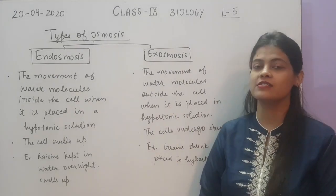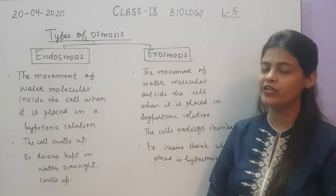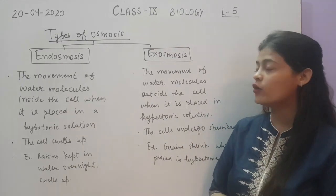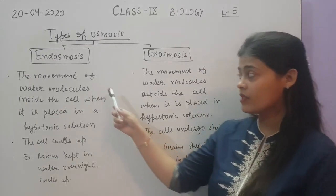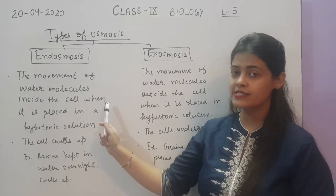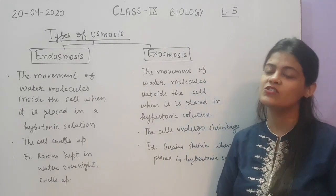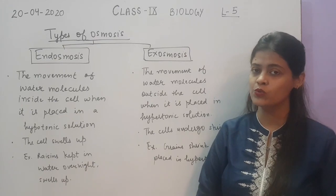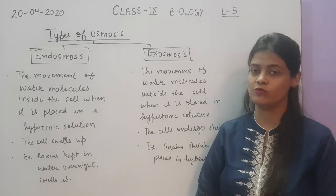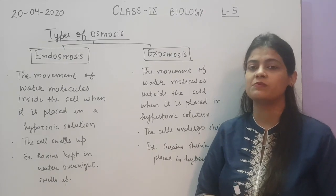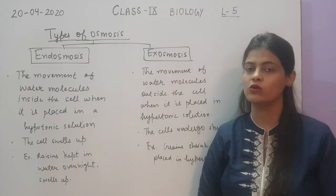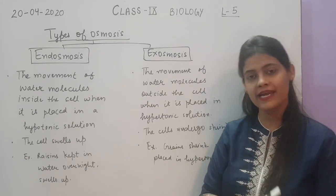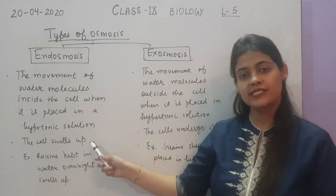So we have discussed the types of solutions on the basis of concentration and movement of water molecules. On the basis of movement of water molecules, there are two types of osmosis: endosmosis and exosmosis. Endosmosis is the movement of water molecules inside the cell when it is placed in hypotonic solution. As we discussed, hypotonic solution has low solute concentration — meaning high water concentration — compared to the cell. So when the cell is placed in hypotonic solution, the net movement of water takes place inside the cell. That process is called endosmosis. The cell will swell up.